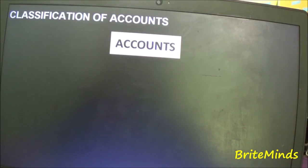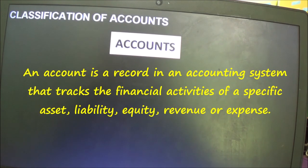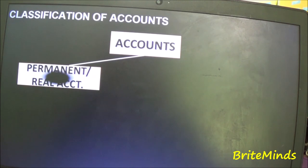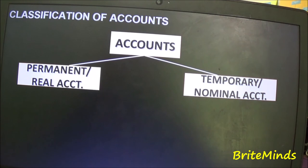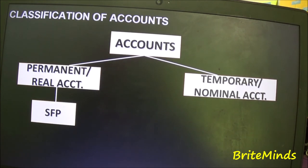The accounts found in the Statement of Financial Position are permanent accounts, also called real accounts. There are two classifications: permanent or real accounts, and temporary or nominal accounts. Permanent accounts are balance sheet accounts whose balances are carried forward from year to year. Examples of permanent accounts are cash, inventories, and accounts receivable. They are found in the Statement of Financial Position and their balances are retained permanently.